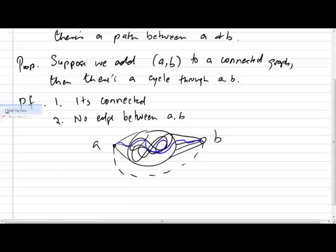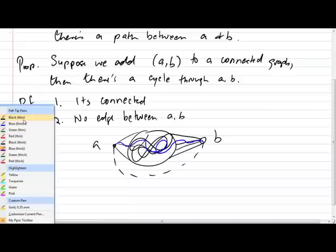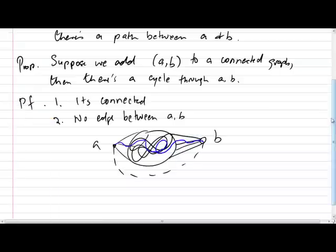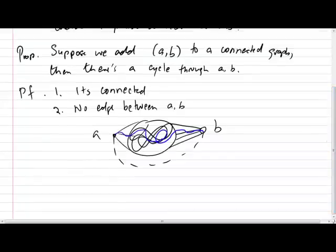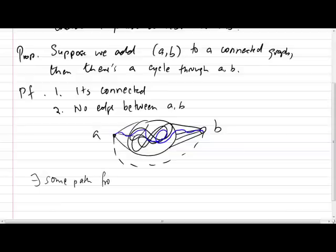And so formally, what we can say is that because of 1, there exists some path from A to B in G. And so let's say the path looks like A to V0 to V1 up to VK and then B. And now we add the edge A, B.